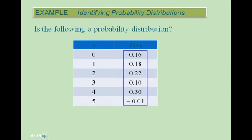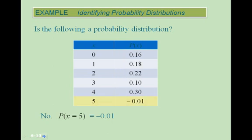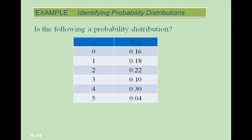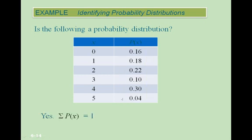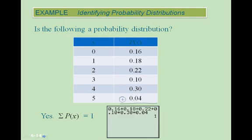In this third example, we see that all values are indeed between 0 and 1, and when we add them together we get 1. So this is an example of a valid probability distribution.